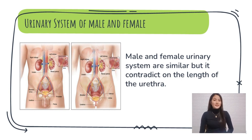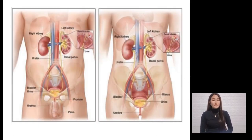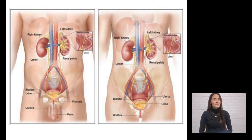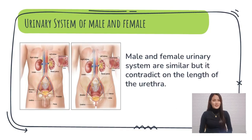The male and female urinary systems are similar, but differ in the length of the urethra. The female urethra is much shorter than that of the male, being 1.5 inches long. In females, the bladder is located in front of the vagina and below the uterus, while in males the bladder sits in front of the rectum and above the prostate gland.